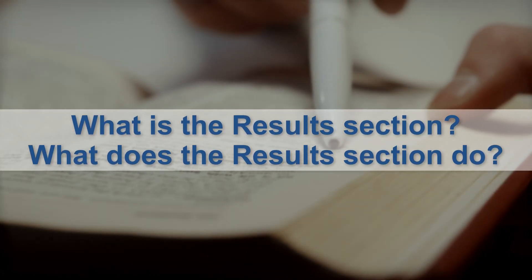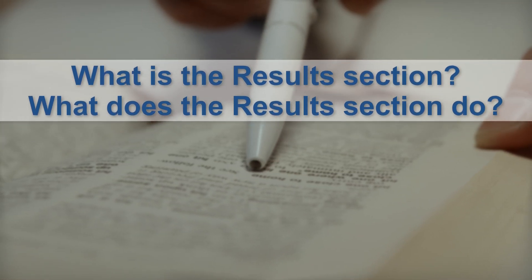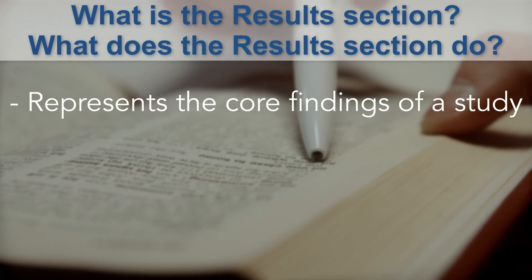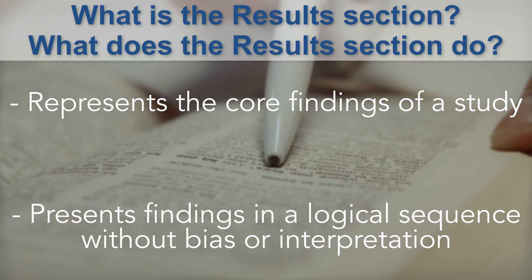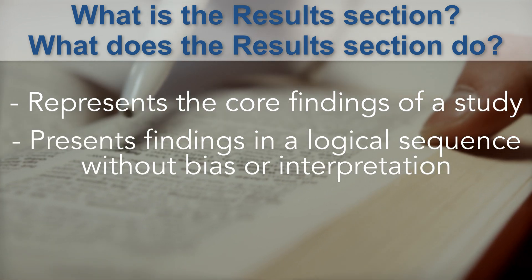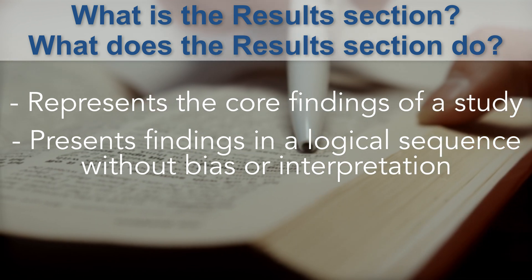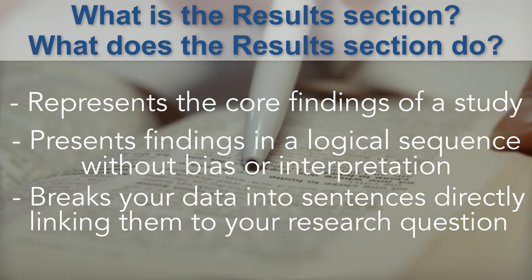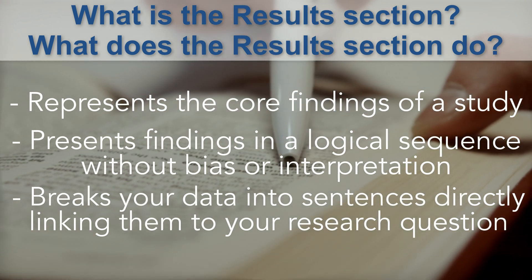What is the results section and what does the results section do? The results section of a scientific research paper represents the core findings of a study. It presents these findings in a logical sequence without bias or interpretation from the author. The results section breaks your data into sentences directly linking them to your research question.